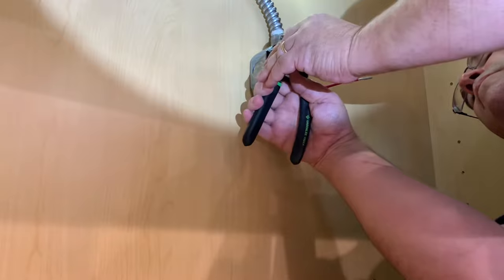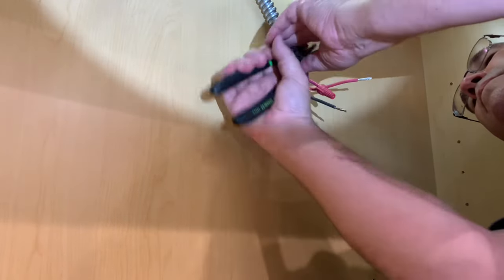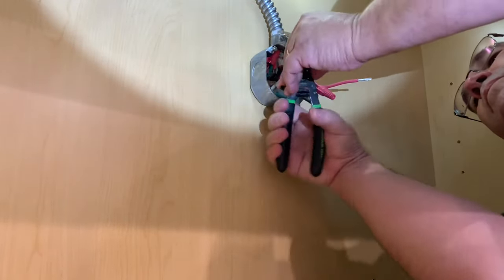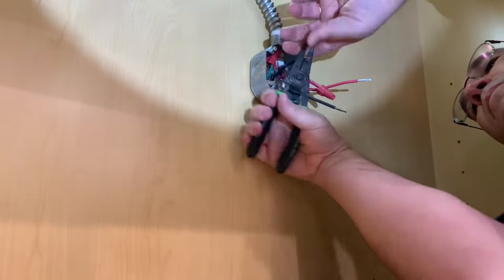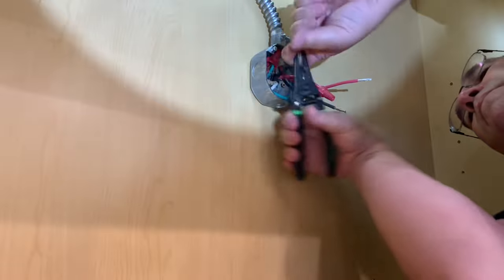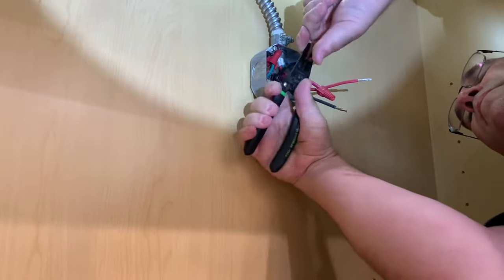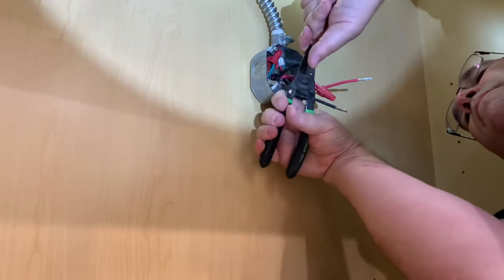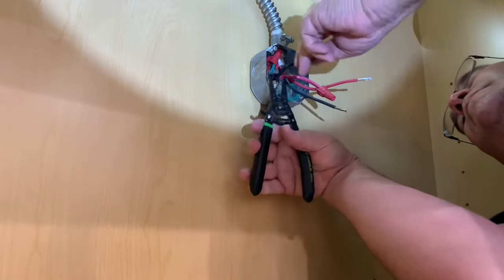In a pure 240 system, like this appliance requires, you have two sets of waves. On one side you have the wave coming in, on the other side you have the wave coming back, returning to the box, and that completes the circuit. So we do not need the neutral wire.